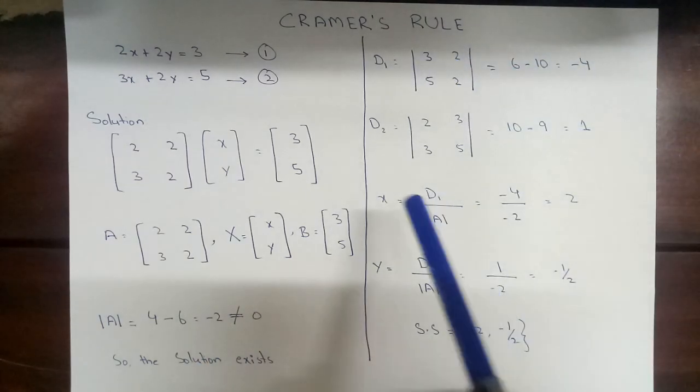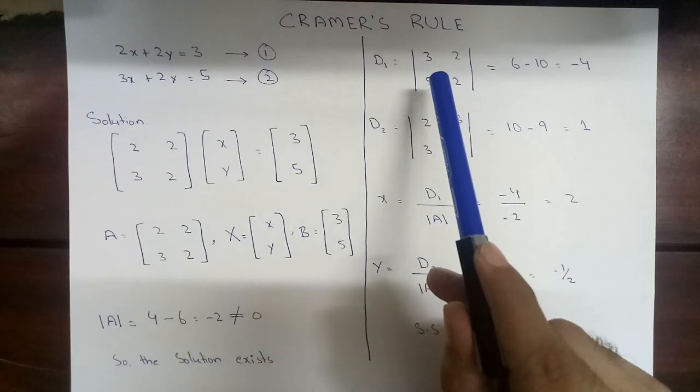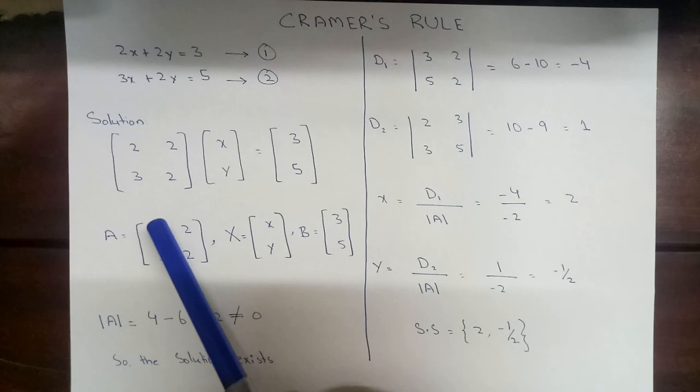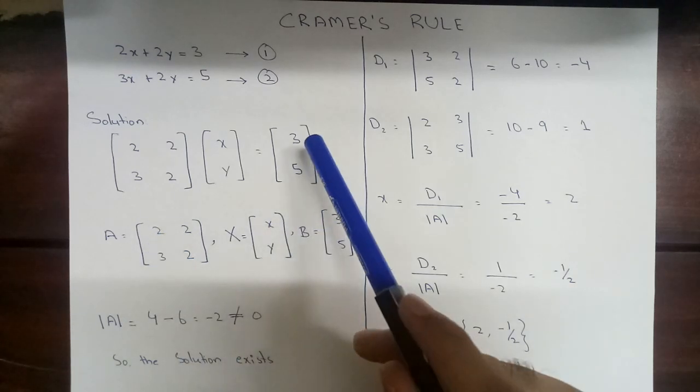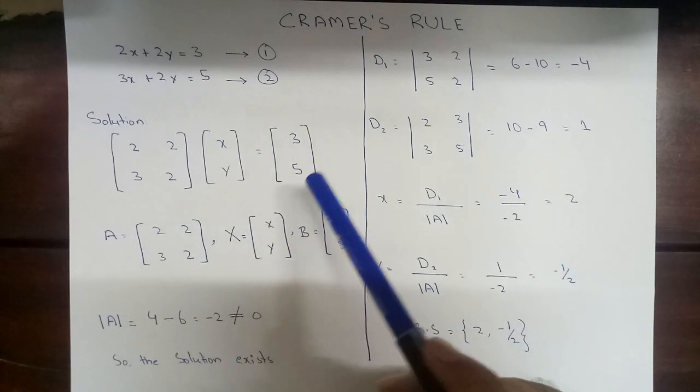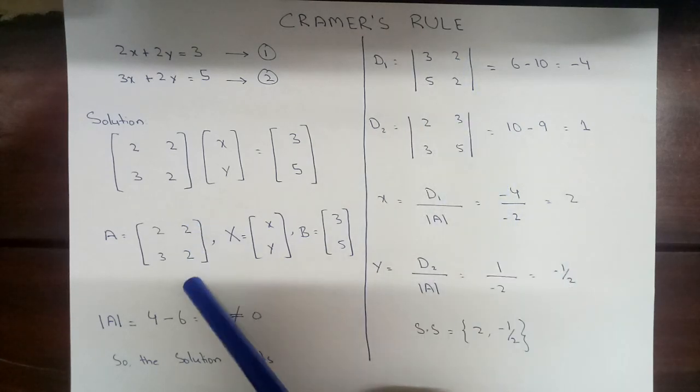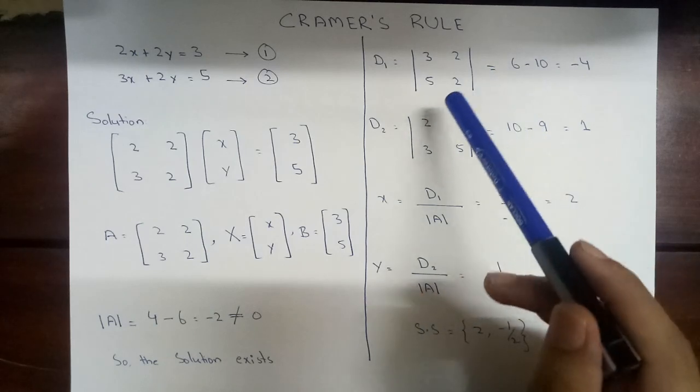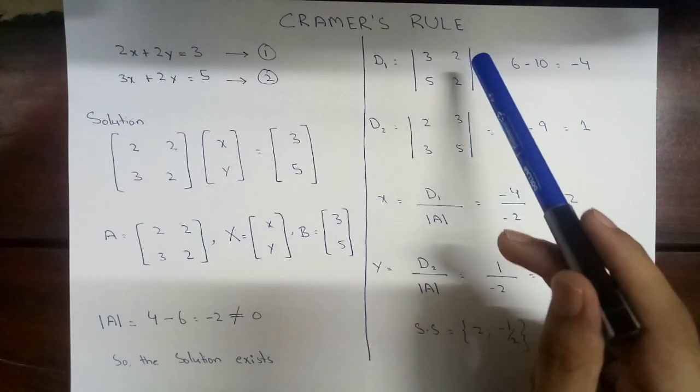D1 is equal to... we will replace the first column of matrix A with 3 and 5. The second column will be placed in the same way. Now here you can see 3, 5, 2, and 2.